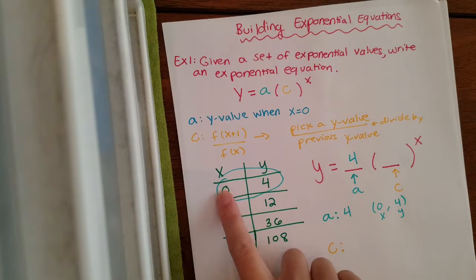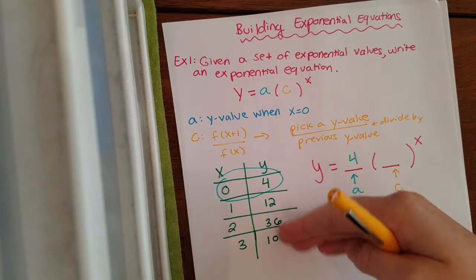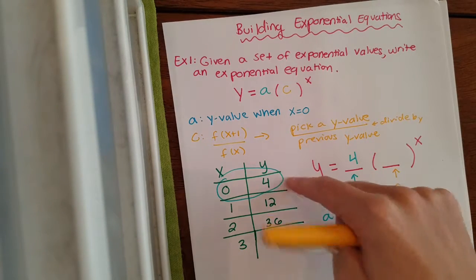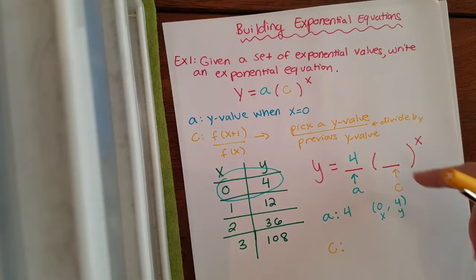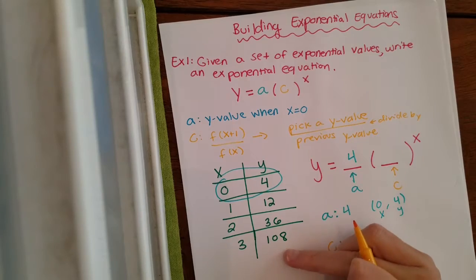So when you do this, you cannot start with the very first y value because there's nothing before it. So you can pick any of these numbers as long as it's not the very first one. And you should get the same number for c no matter what you pick.